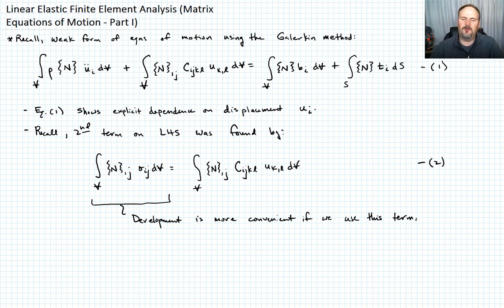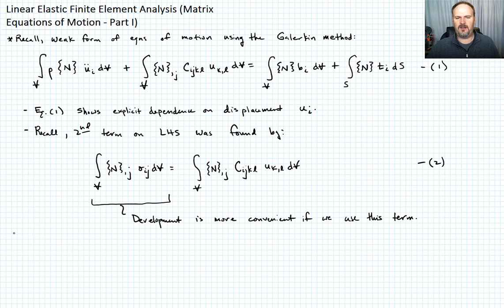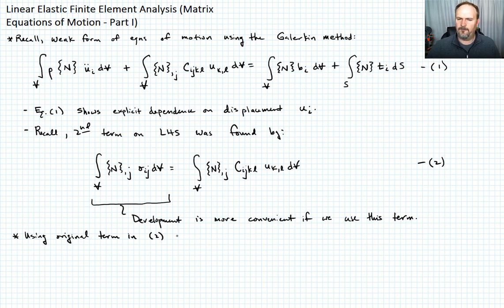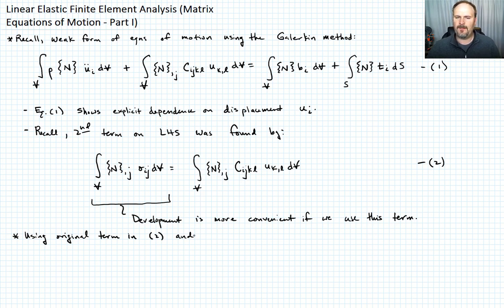You're probably going to be happy about that because you didn't really want to deal with a fourth-order tensor with 81 components. So we're going to go back to using this term — what I'll call equation 2, using the original sigma_ij term. And I'm going to explicitly write out all the i's, so instead of writing u_i I'm going to write u1, u2, and u3, and break equation 1 into three separate equations.